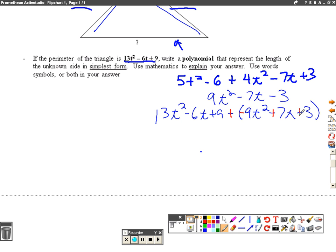So now what we're really doing is we're just combining like terms. 13 minus 9 gives us 4t squared. Negative 6t plus 7t gives us 1t. And plus 9 and a positive 3 give us 12. So this is the length of the third side of our triangle.